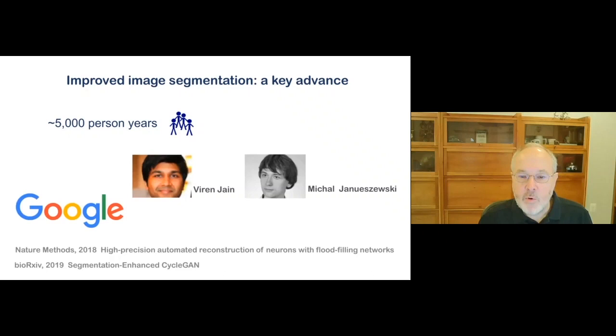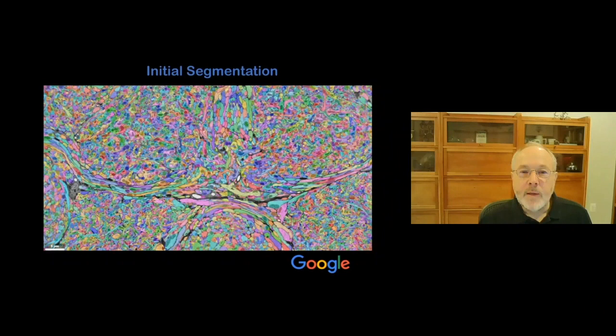Extrapolating from the small volume we had completed led, unfortunately, to estimates that it would take 5,000 person years to do the entire fly brain, to go from the segmented image volume to the full connectome. So we're very fortunate to establish a collaboration with Google on image segmentation. The resulting algorithmic improvements and computing power that they provided allowed us to reduce our estimate from 5,000 to 200 person years for proofreading the full brain, a manageable number.